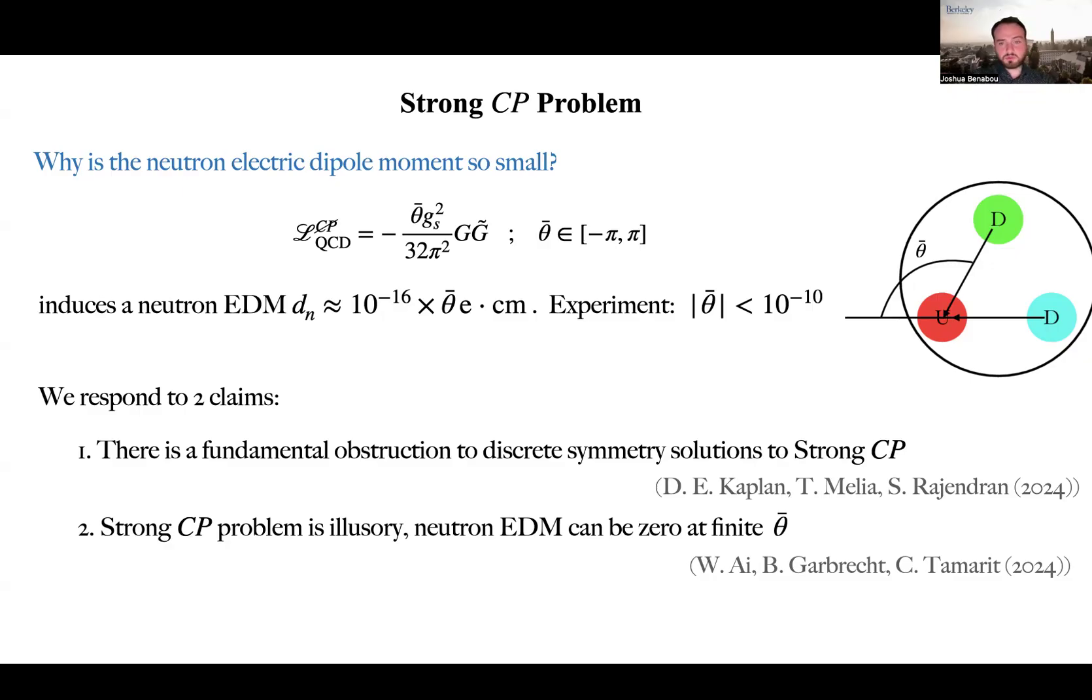In our paper, we respond to two claims concerning the strong CP problem. First, claims made in the recent work of Kaplan, Melia, and Rajendran that there is a fundamental obstruction to so-called discrete symmetry solutions to strong CP.